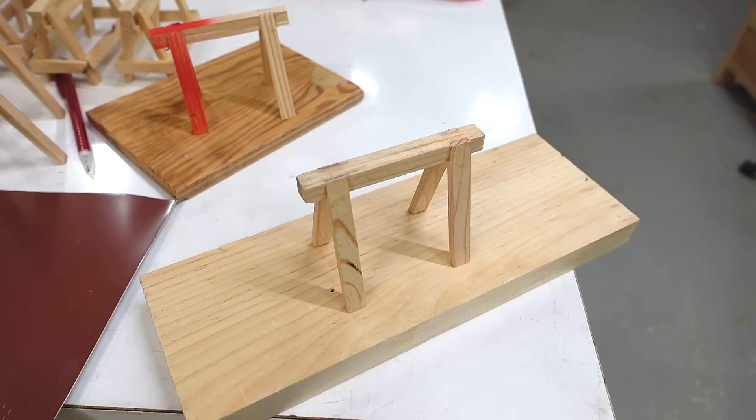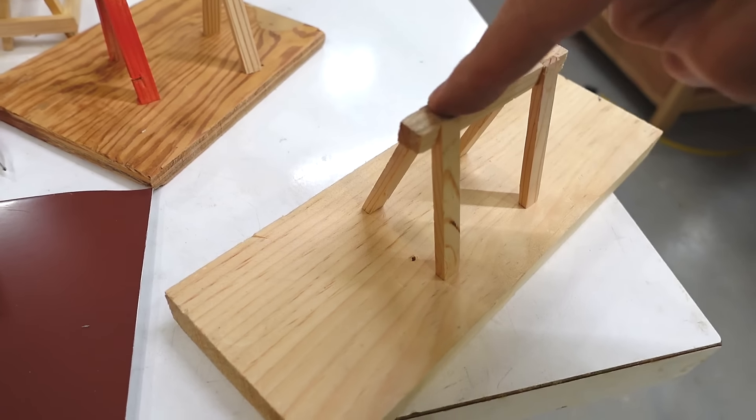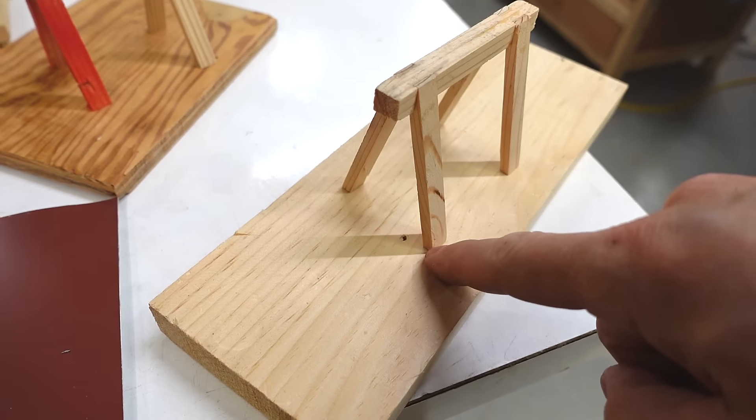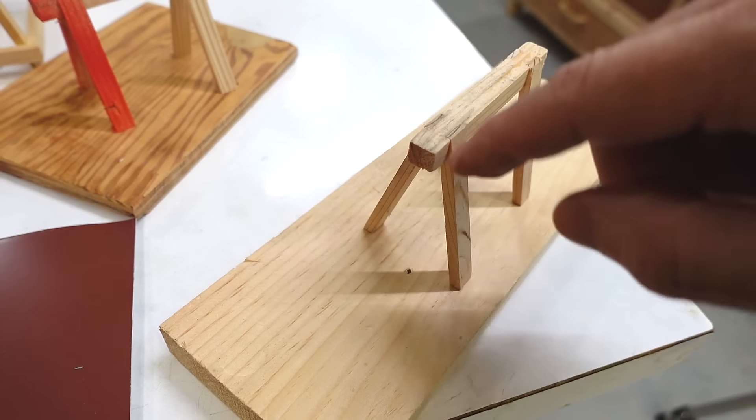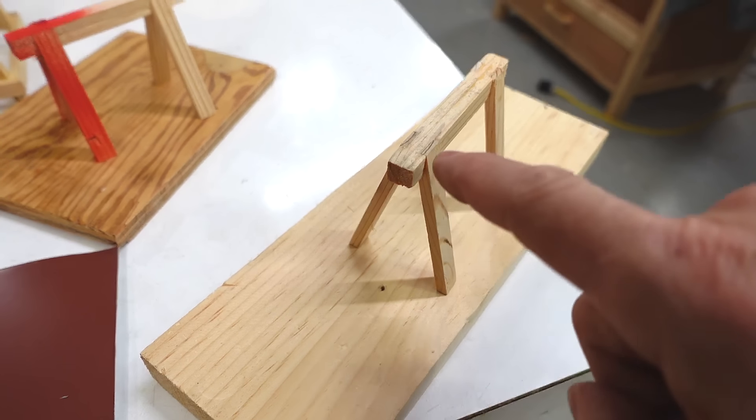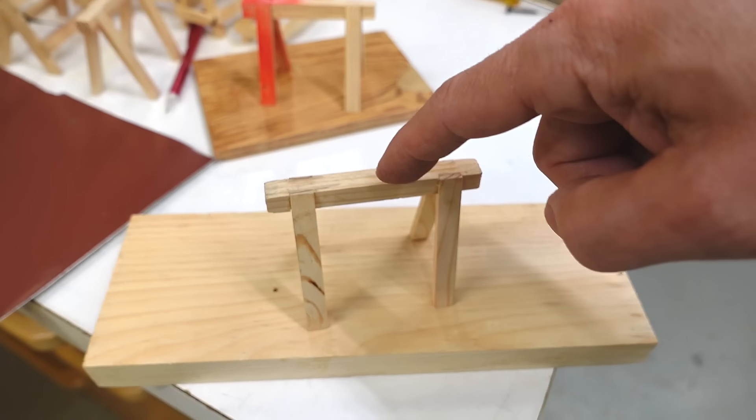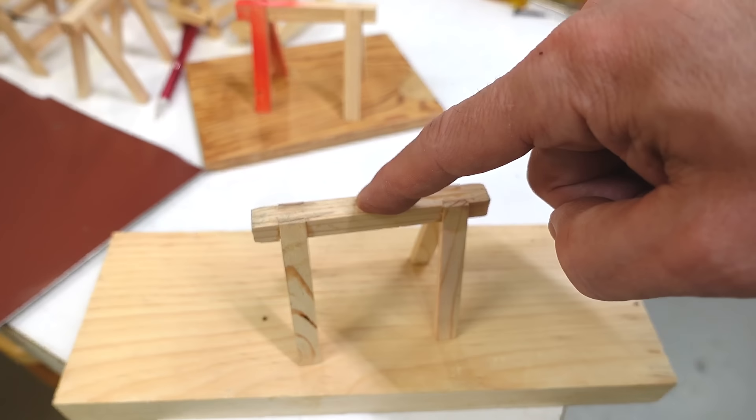So if I scale that up, that should hold potentially 9 tons, which actually doesn't really surprise me that much. Now what makes sawhorses so strong is when you push down on here, these legs kind of push into the floor, and they don't actually slide out so easily. So basically the floor and the legs form this triangle here, and then you're just limited by the strength of this beam here.